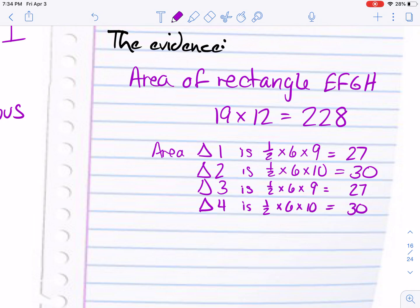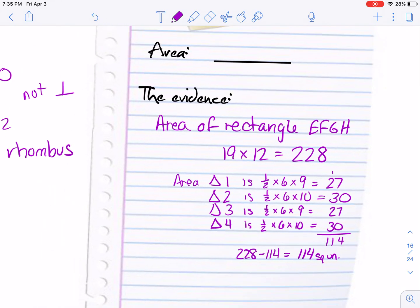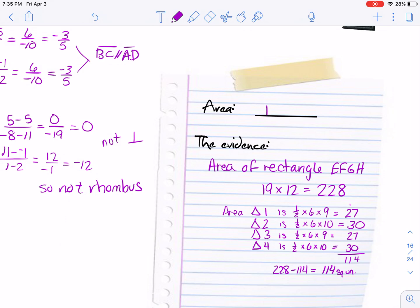So then we need to subtract all of those from 228. So I'm going to add them up first, so that's 114. So then you do 228 minus the 114, and you actually get 114 also. So then that is the area of the parallelogram.